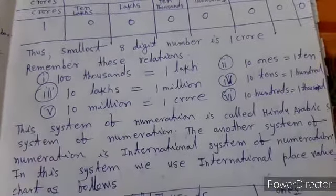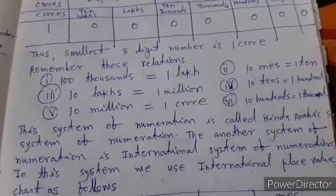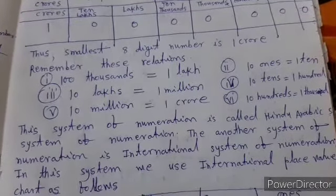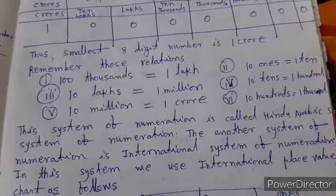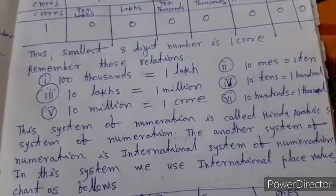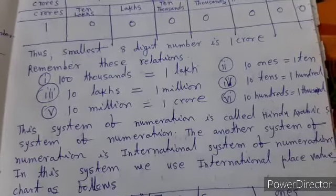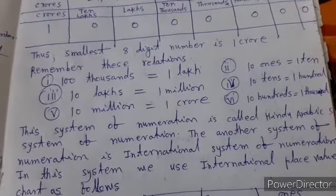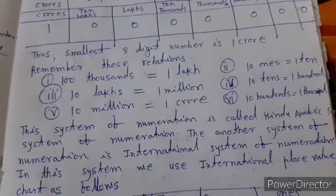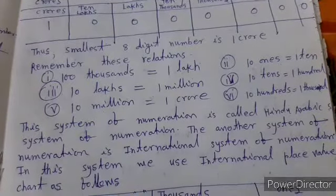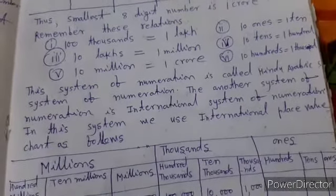This system of numeration is called Hindu-Arabic system of numeration. Another system of numeration is international system of numeration. In this system we use international place value chart. We make periods of 3 digits. For example, millions, thousands and ones.